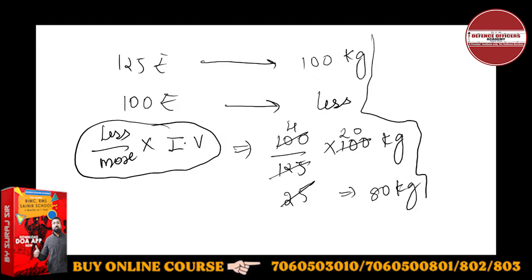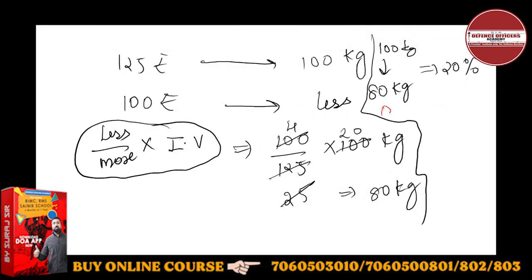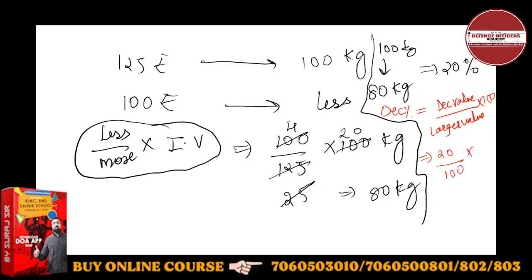Now see how much decrement happened in consumption. Earlier consumption was 100 kg, now it has become 80 kg. So in the case of 100, you can directly say the answer is 20%. Because 20 kg is reduced, that is 20%. To find it properly: decreasing percentage equals decreased value upon larger value into 100. Decreased value is 20, larger value is 100 — the 100s cancel — so the answer is 20%.